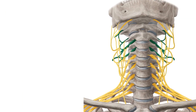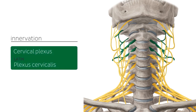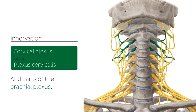In terms of innervation, you only need to know that all scalene muscles have the same innervation coming from the cervical plexus, seen here highlighted in green on this image, as well as some parts of the brachial plexus.